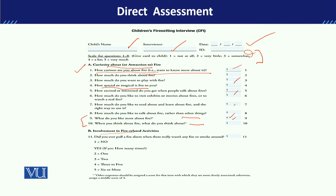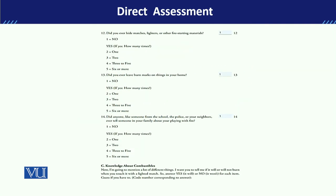When we come to Part B, it covers involvement in fire-related activities. For example: 'Did you ever pull a fire alarm when there really was no fire or smoke around?' If the answer is no, give a value of one. If yes, you ask how many times — once, twice, three times, or more than six times — and rate accordingly. You need to find the rating skill from here.